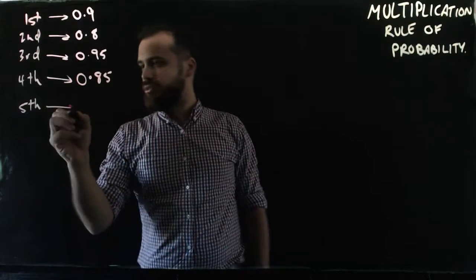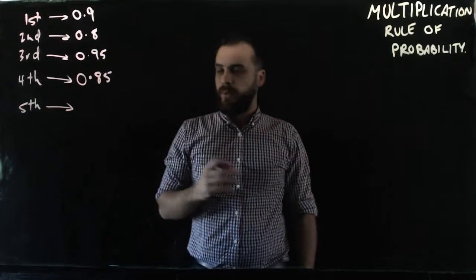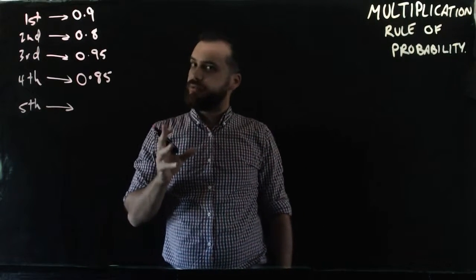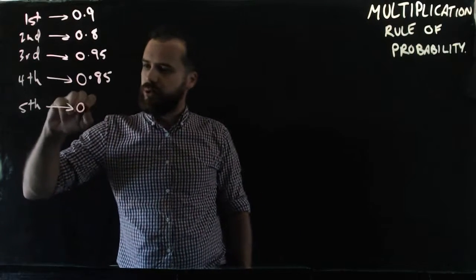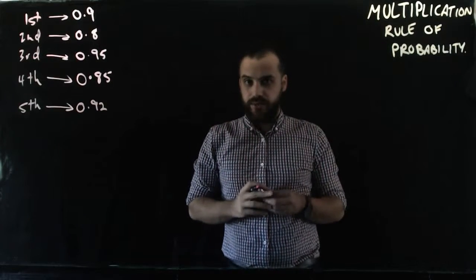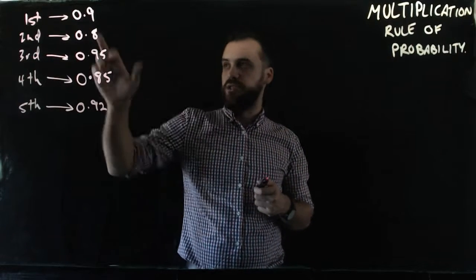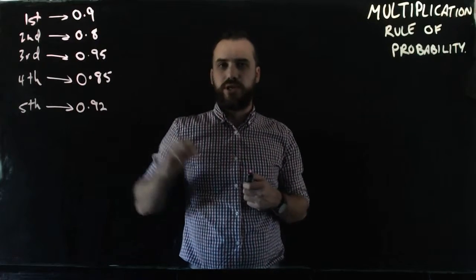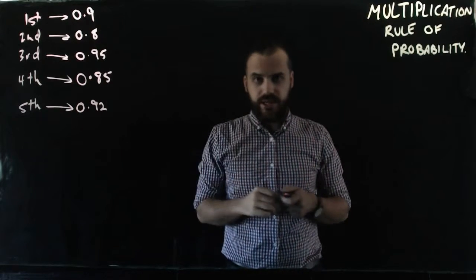Let's assume our fifths are looking good. Let's give them a 0.92 chance of winning. Now each of these can be expressed as 90%, 80%, 95%, 85%, or 92%. I'm just expressing them as a decimal.